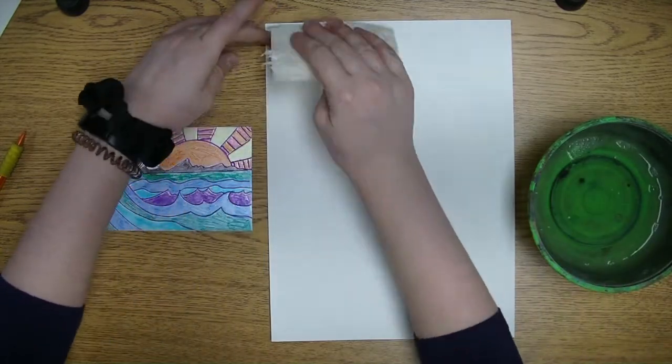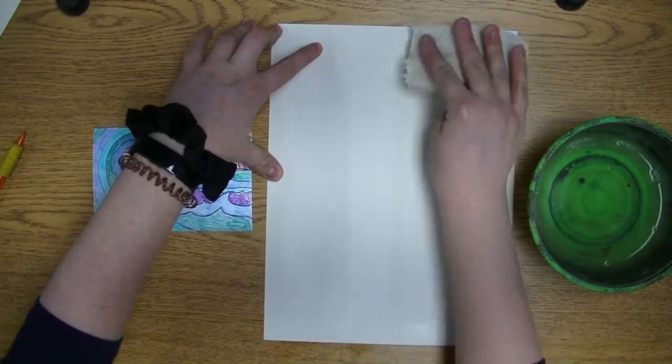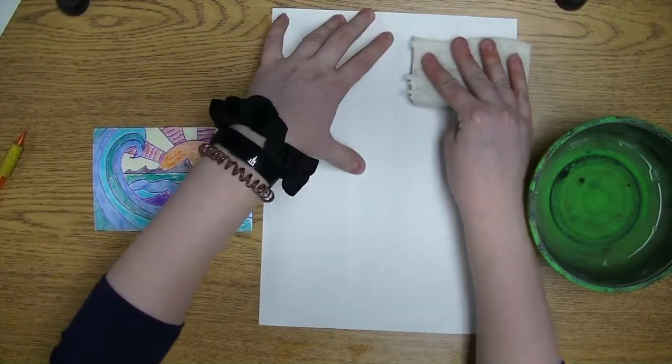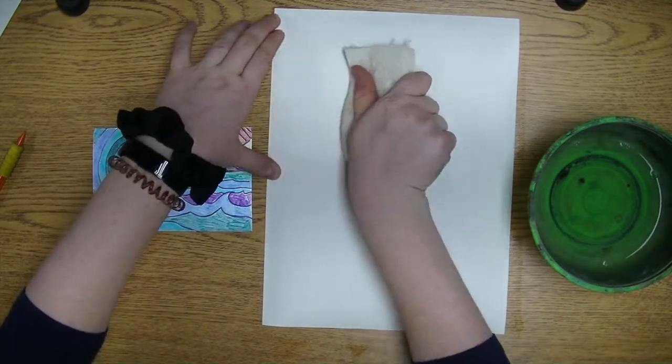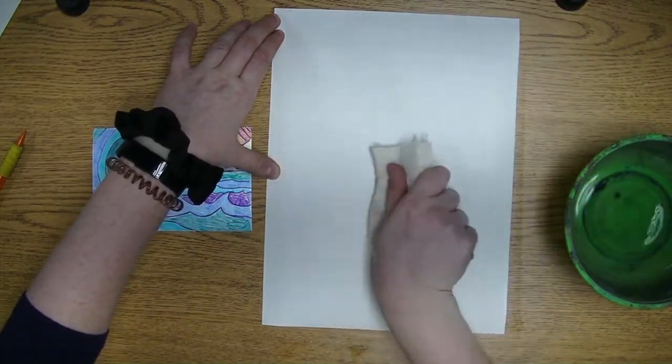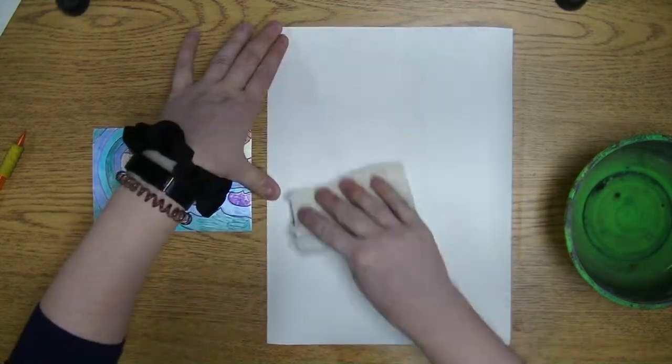We kind of want it to be shiny, so I'm going one direction just kind of dragging it across the paper, and then I'm also going to drag it across the opposite way.